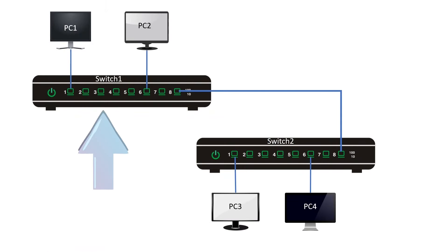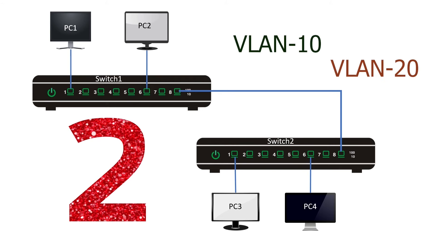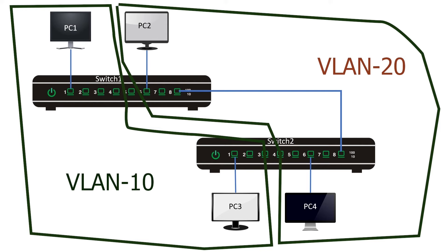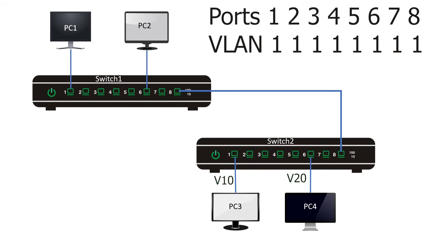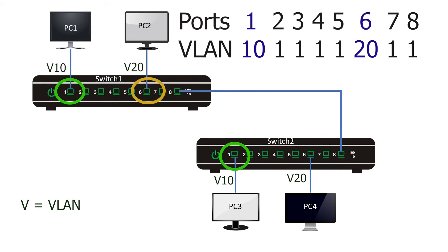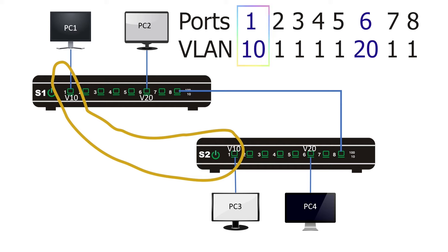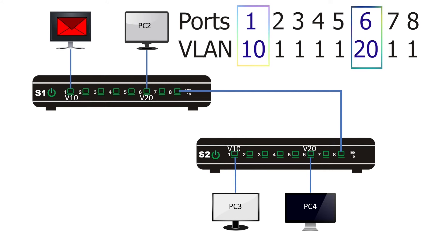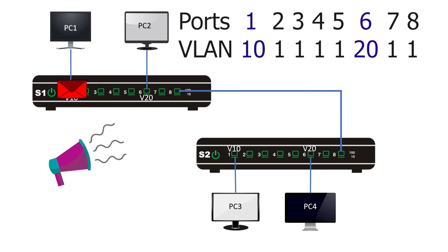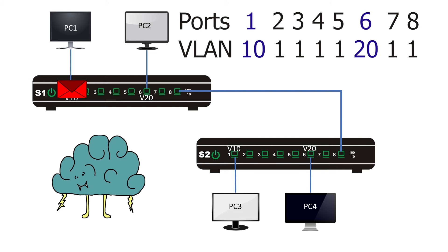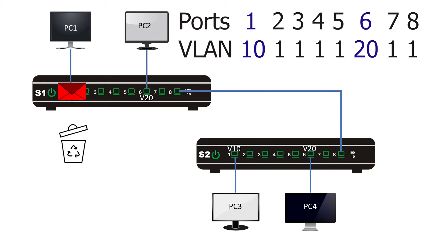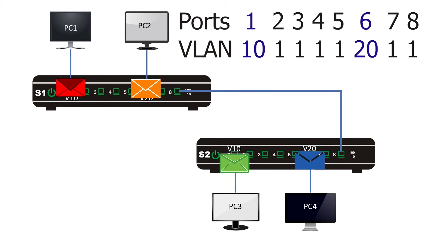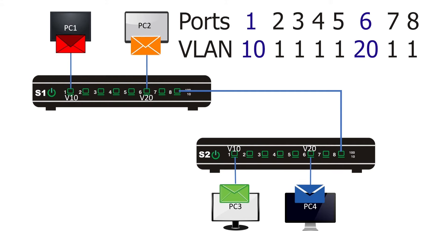For example, consider a network with two switches, each having two PCs. Suppose we want to create two VLANs: VLAN 10 for PC1 and PC3, and VLAN 20 for PC2 and PC4. We create VLAN 10 and 20 on both switches and change the VLAN IDs on the ports connected to PCs — port 1 in VLAN 10, port 6 in VLAN 20, on both switches. When PC1 generates a broadcast frame, the switch can find no other port with VLAN ID 10 and drops the frame. The same happens for PC2, PC3, and PC4, so devices across switches never receive each other's broadcast frames.